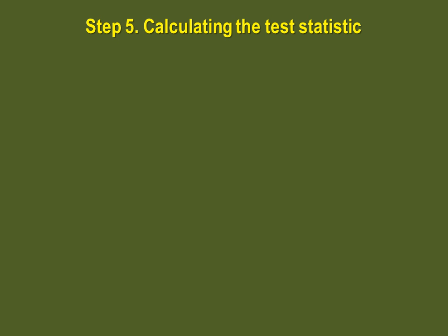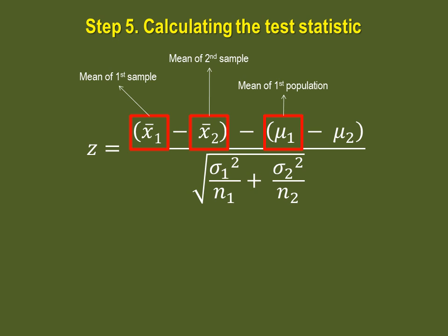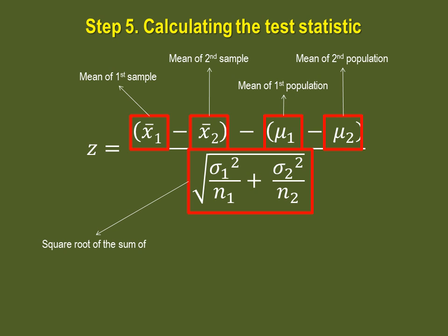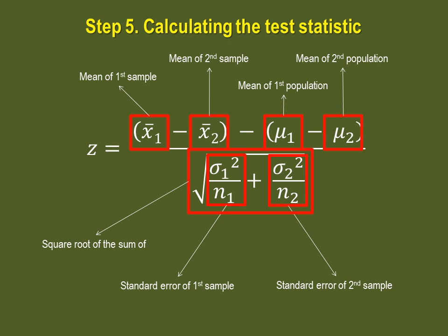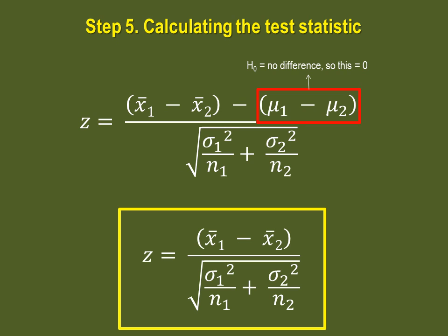Step 5 is calculating the test statistic. It is still a z-value, but there is another variation on z-scores. Here is the equation for comparing sample means: we first take the mean of our first sample minus the mean of our second sample, subtract the result of the mean of the first population minus the mean of the second population, and divide the total by the square root of the sum of the standard errors of the first and second samples. We can simplify this equation because the null hypothesis tells us both population means are equal. When we subtract two equal values, the result is 0, so the equation simplifies accordingly.